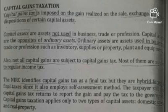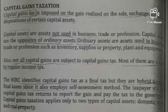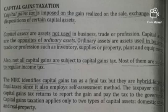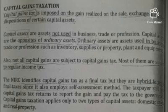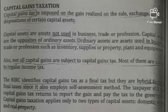We are now on the second tax scheme: capital gains taxation. The capital gains tax is a tax imposed on the gain realized on the sale, exchange, and other dispositions of certain capital assets. Capital assets are assets that are not used in business, trade, or profession — the opposite of ordinary assets, which are assets used in business such as inventory, supplies, or property, plant, and equipment. Not all capital gains are subject to capital gains tax; most of them are subject to regular income tax.